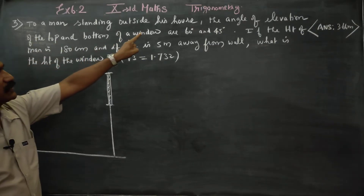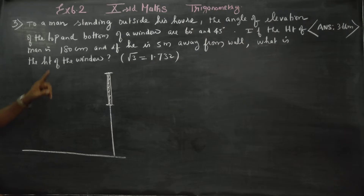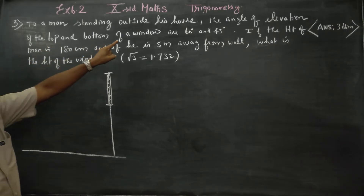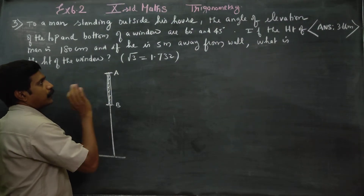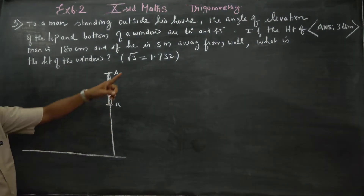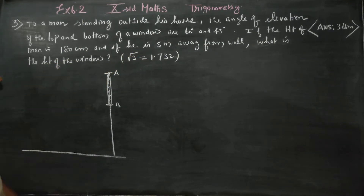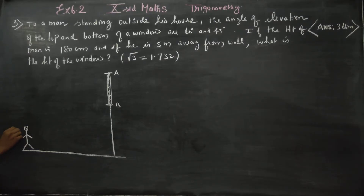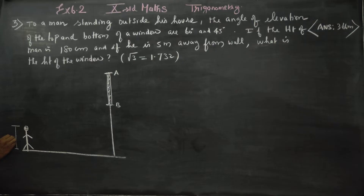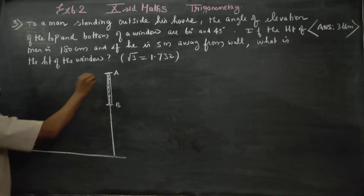A man standing outside his house — the angle of elevation of the top and bottom of the window. The height of the man is 180 cm. This is the bottom of the window.